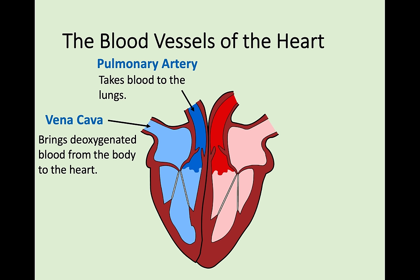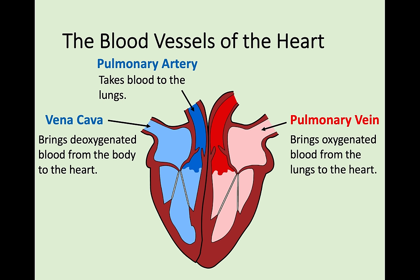Once the blood has gone to the lungs it picks up oxygen and is now oxygenated. The blood has gone around the lungs and comes back into the heart - into the left atrium through the pulmonary vein. The pulmonary artery goes away from the heart to the lungs, and from the lungs back to the heart it's the pulmonary vein. The pulmonary vein brings oxygenated blood from the lungs back into the left atrium, then into the left ventricle, and then out through the aorta.